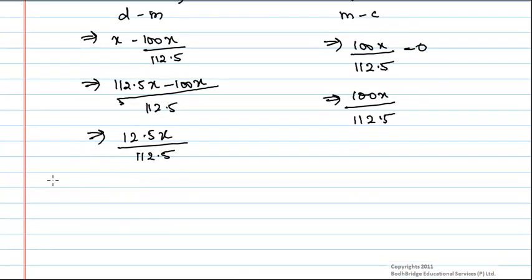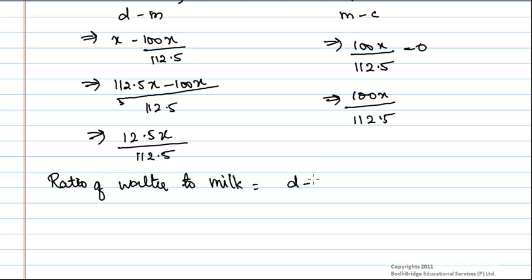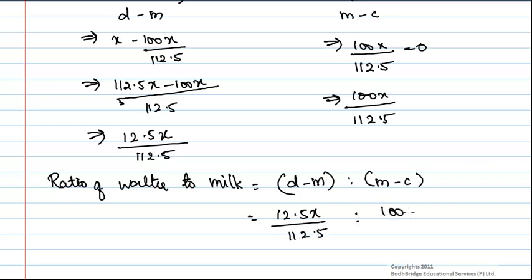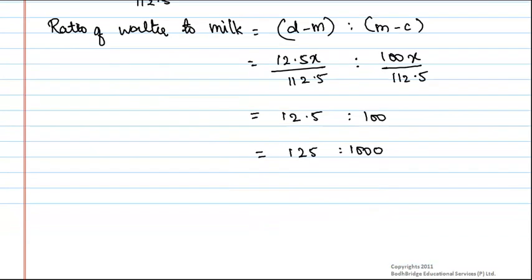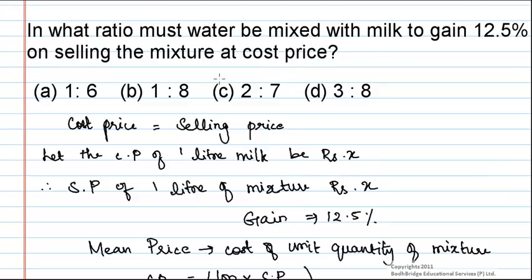Now, the ratio of water to milk equals D minus M : M minus C, which is (12.5X / 112.5) : (100X / 112.5). This simplifies to 12.5 : 100, which is equal to 125 : 1000, and further simplifies to 1 : 8. Therefore, water is to be mixed with milk in the ratio of 1 is to 8 to gain 12.5%, which is option B.